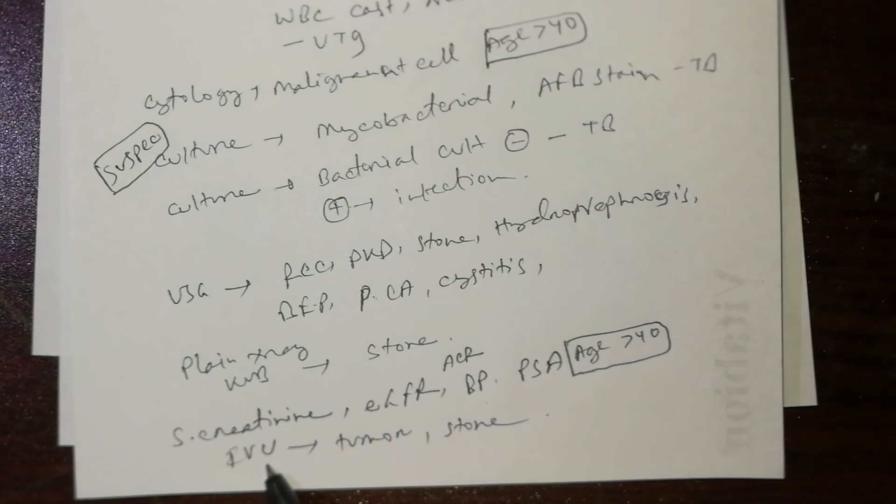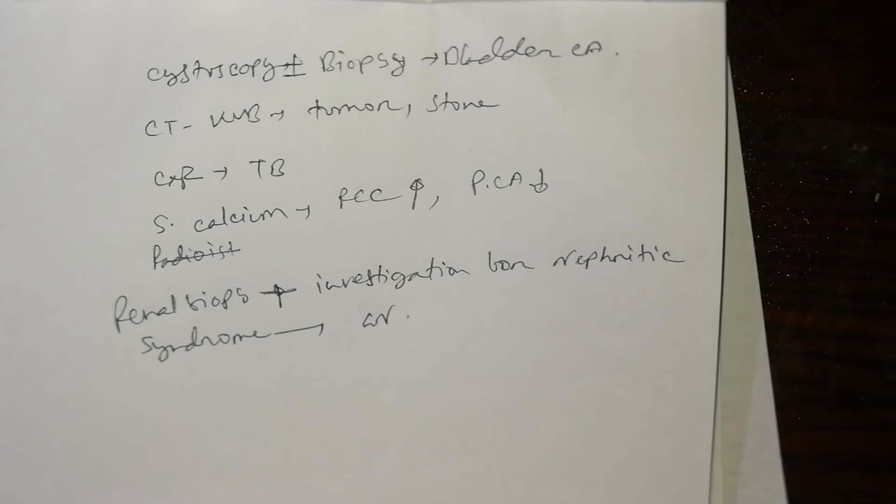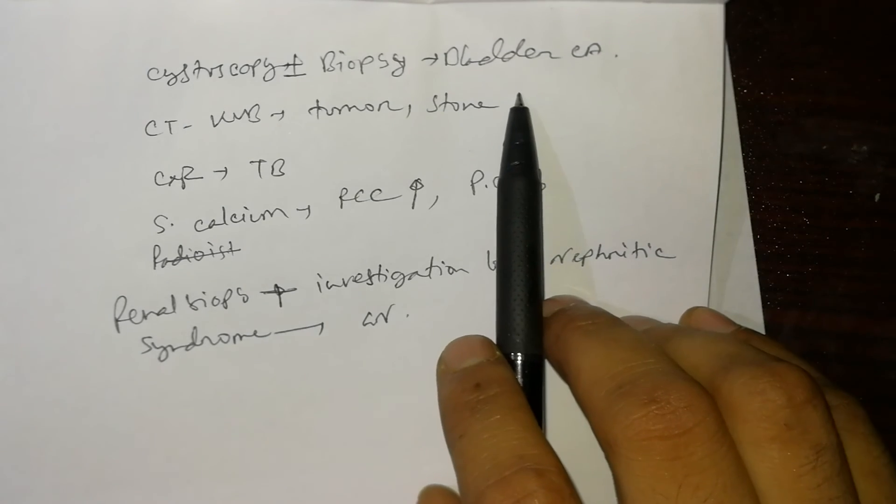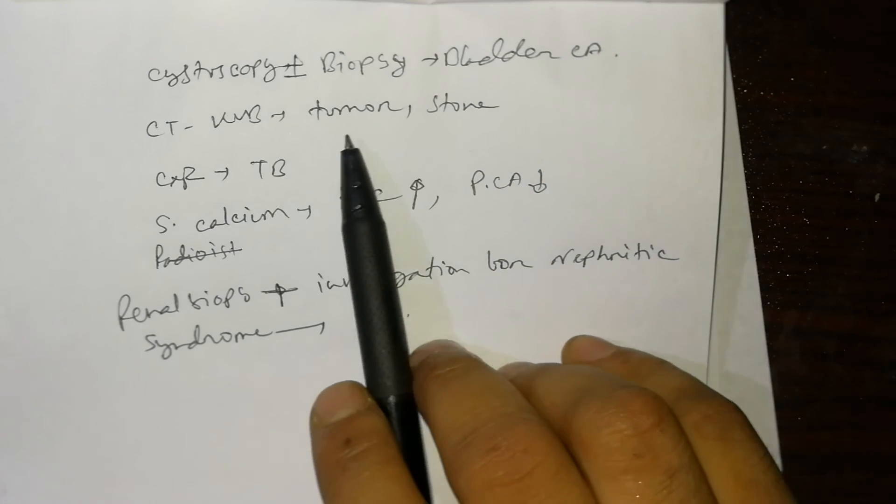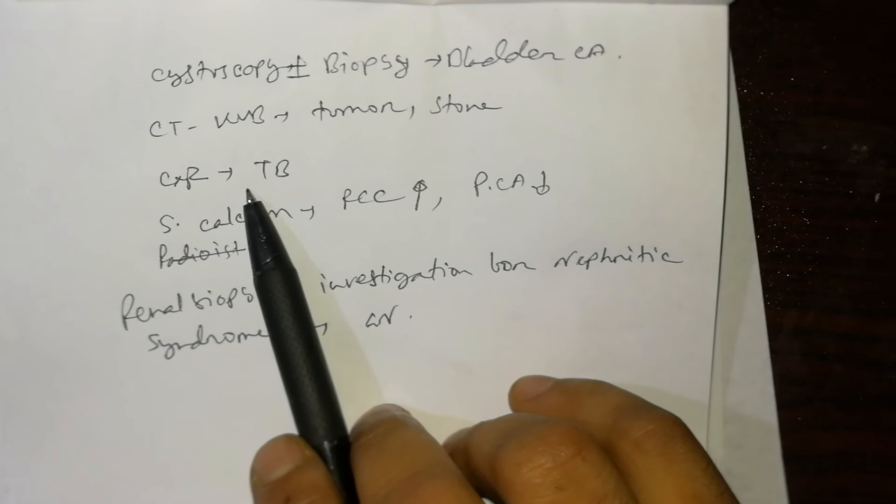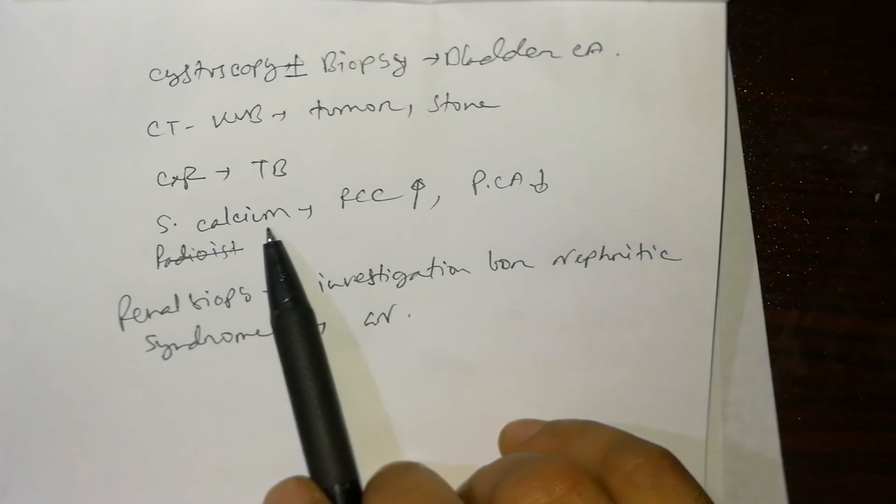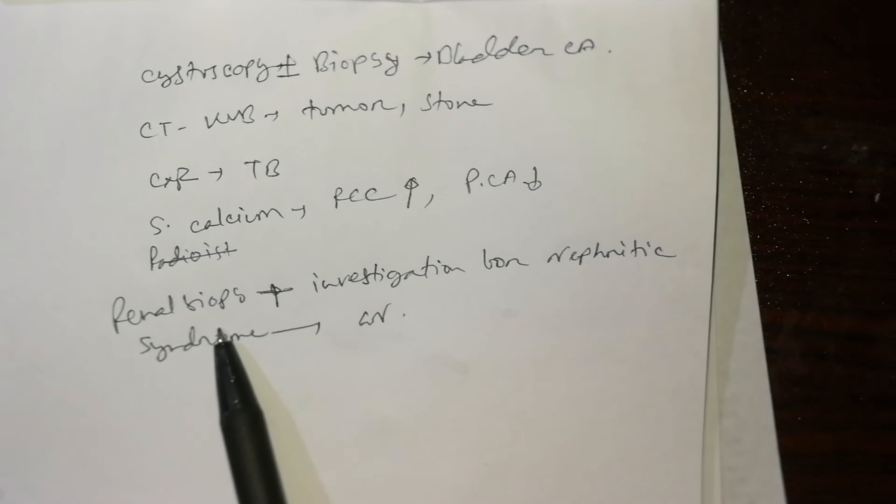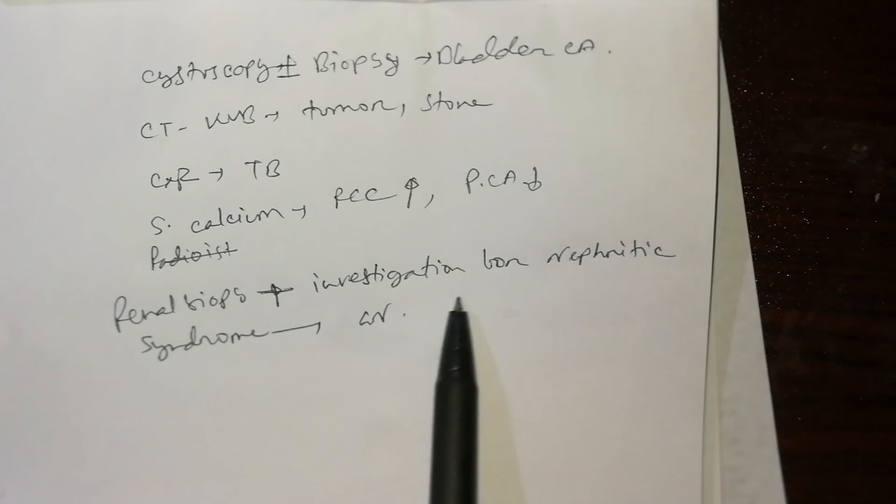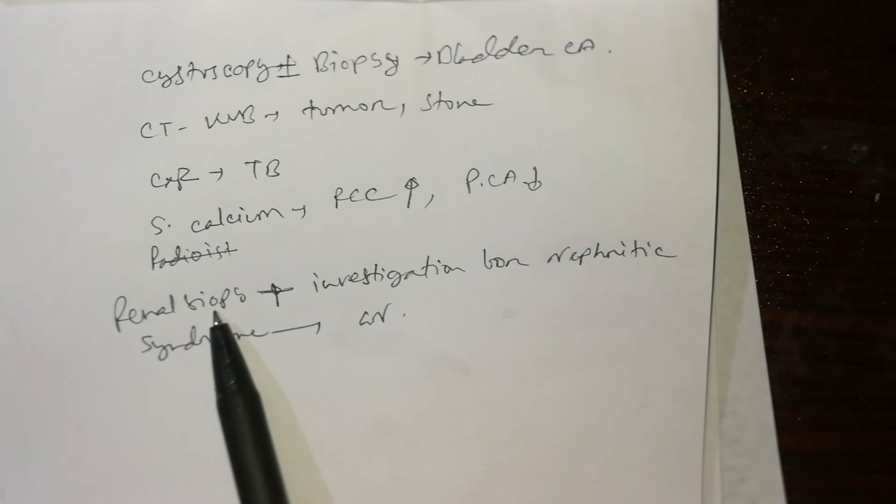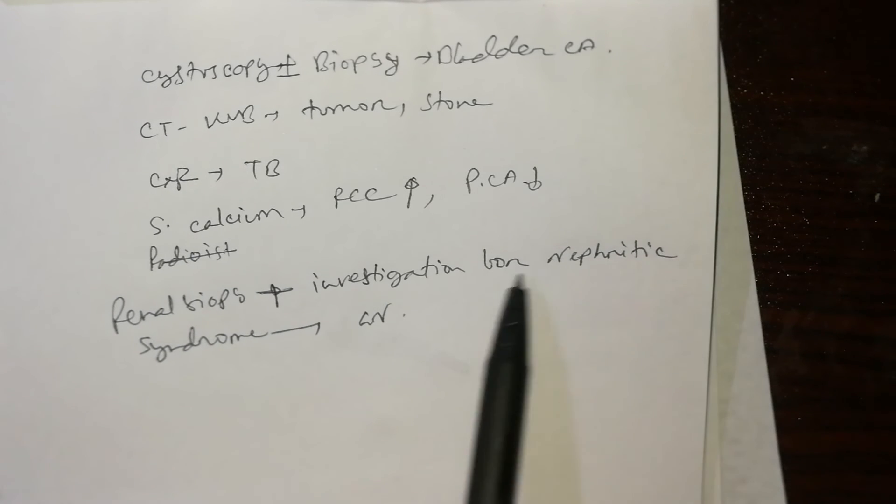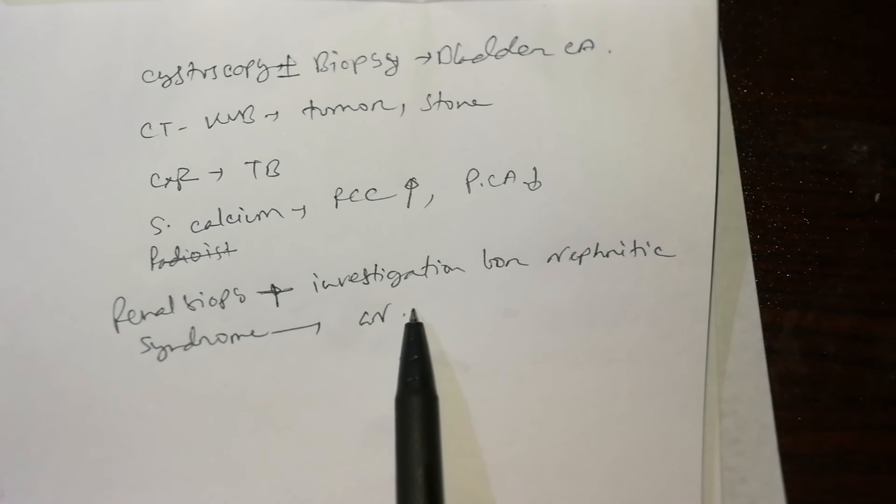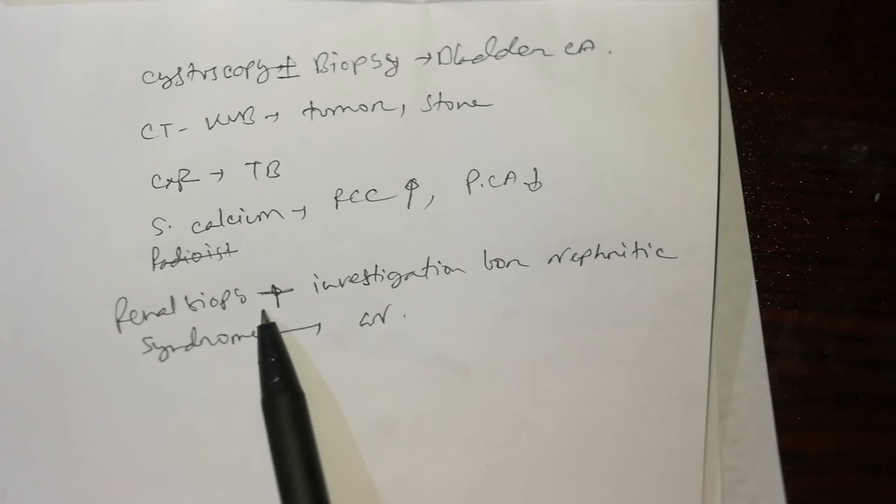IVU is for tumor or stone. Special investigations include cystoscopy plus or minus biopsy in bladder carcinoma, CT KUB for tumor and stone, chest x-ray for tuberculosis, serum calcium which increases in renal cell carcinoma and decreases in prostatic carcinoma. Renal biopsy is the investigation for nephritic syndrome. You do renal biopsy when GN is almost confirmatory.